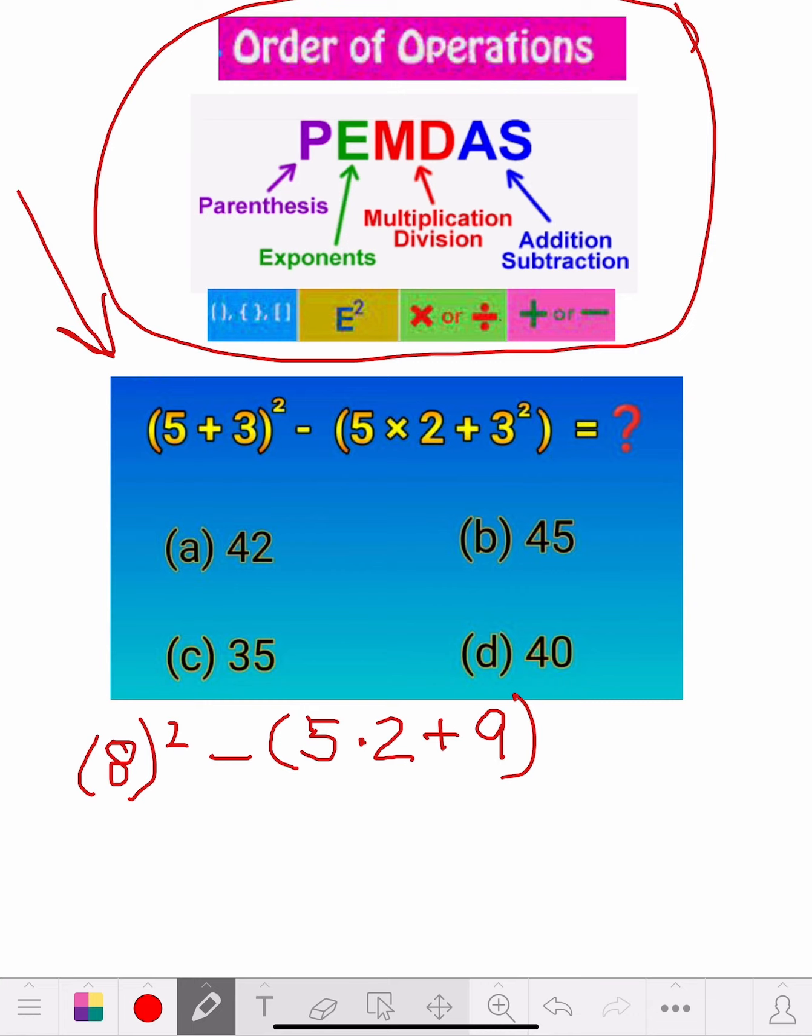Now we've got 8 squared. Exponents, the square, so let's write 64. 64 minus. Let's follow with PEMDAS. Now we've got 5 times 2, because the next one is multiplication, division, right here. So 5 times 2 is 10, and then we have plus 9. We're still going to bracket there, so let's continue.